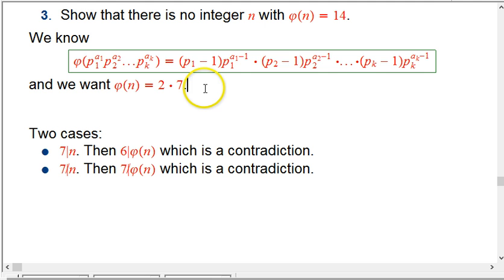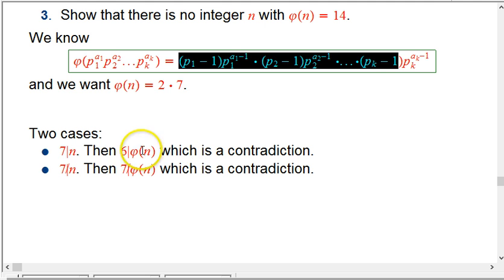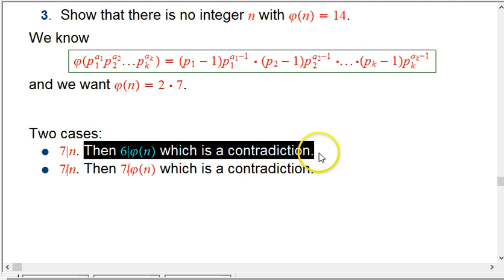The fact is, this isn't divisible by 6. So this can't be written as 6 times a bunch of other integers. So that's what I mean here. 6 does not, in fact, divide 14, which is what we're trying to get. And so that's a contradiction.